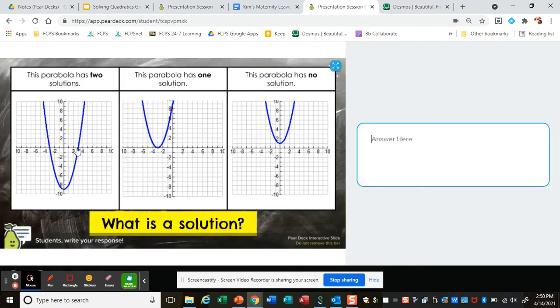Finally, this graph has two solutions. This has one solution. This has no solution. The solution is the same thing as a zero, root, and x-intercept.